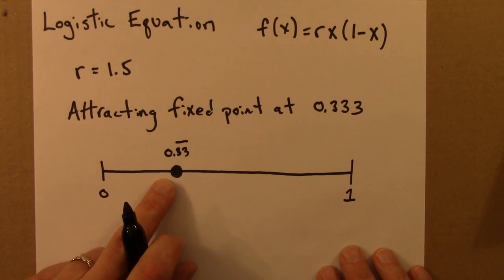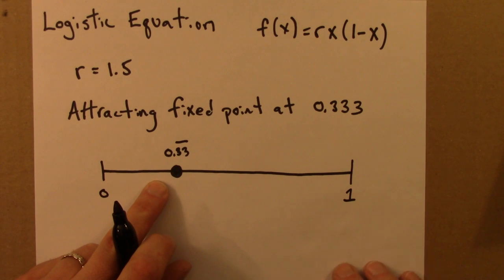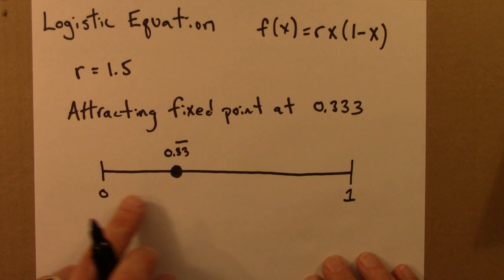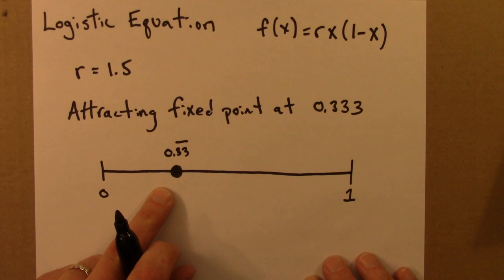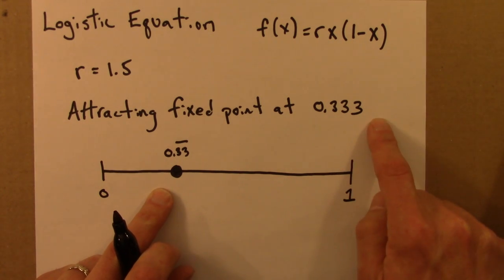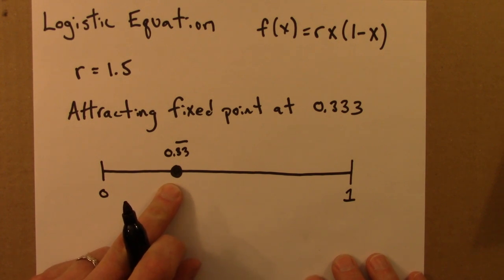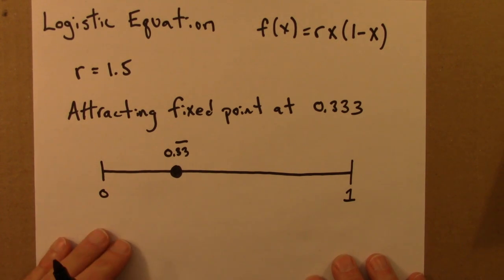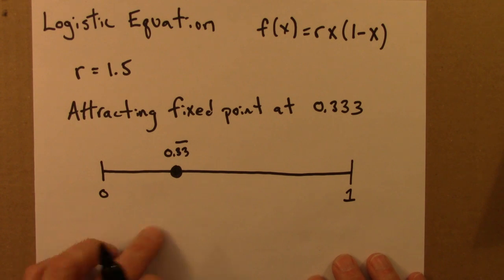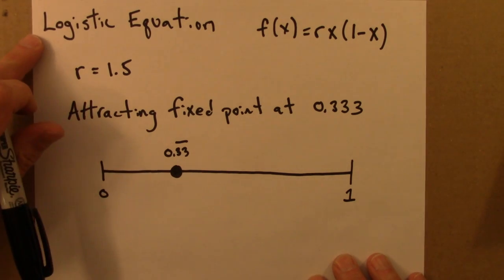Because for this situation, the final state just has a single dot at 0.33 or a third. Because if I iterated the system for a long time and then went and watched it, I would just see it fixed at this point. Okay, let's go back to the program and investigate the logistic equation, orbits of the logistic equation, for another value of R.